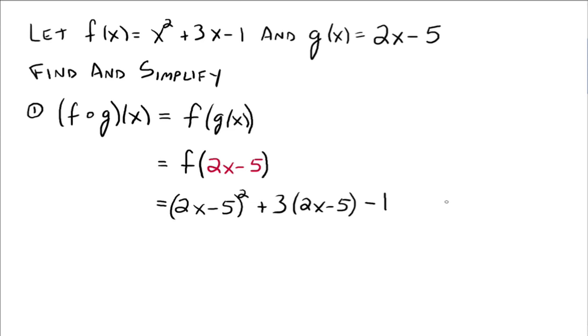Everybody see that? Okay, and then we're just going to simplify all this up. 2x - 5 squared. That's a binomial squared, so we write that as (2x - 5) times (2x - 5) and multiply it all out. And when you do that, you get 4x² - 20x + 25.